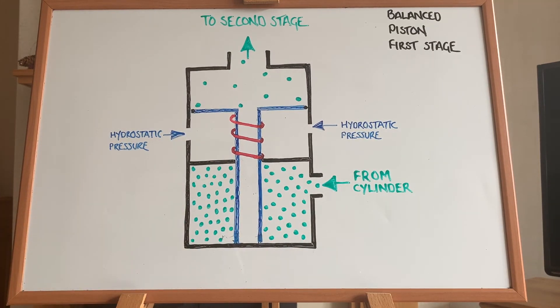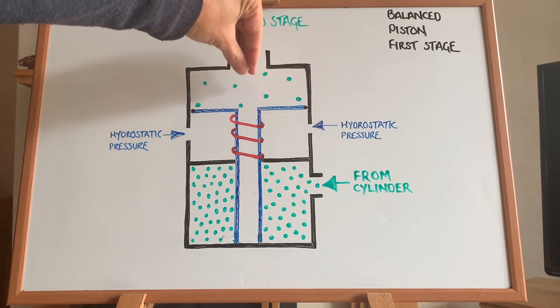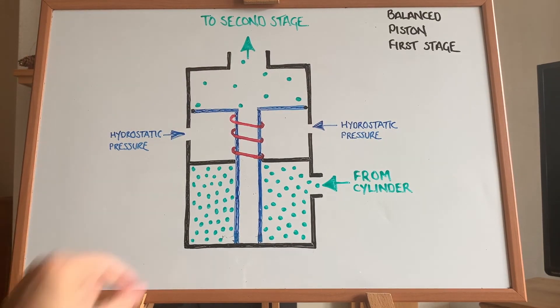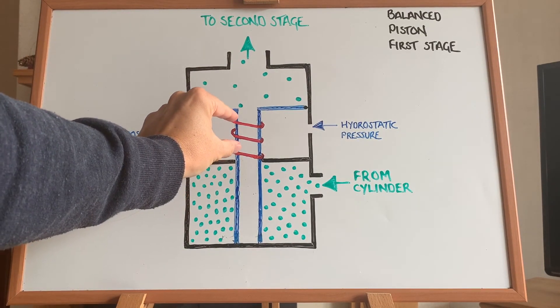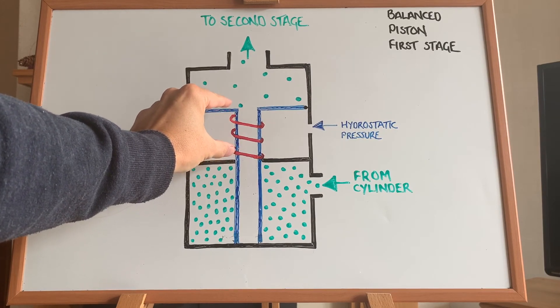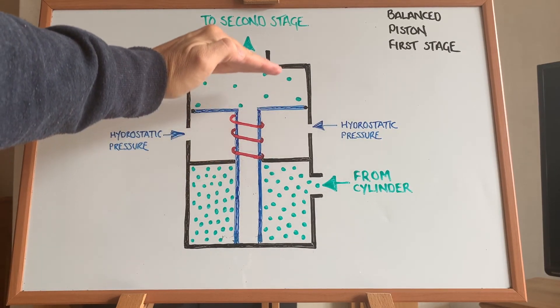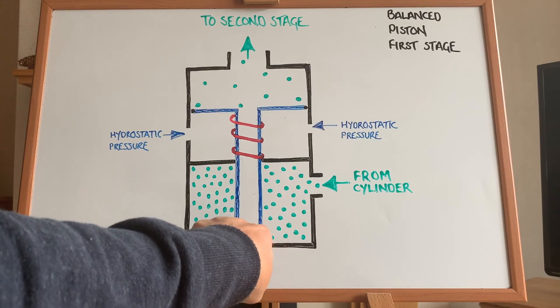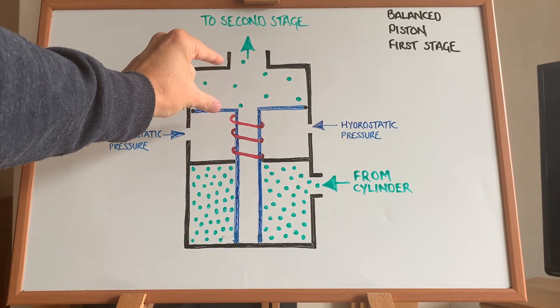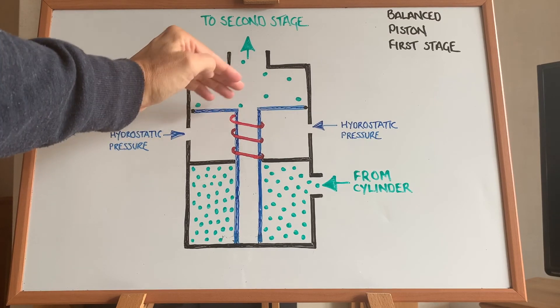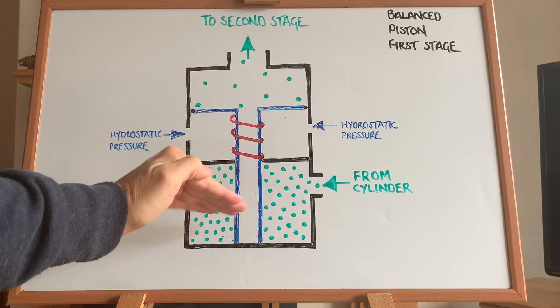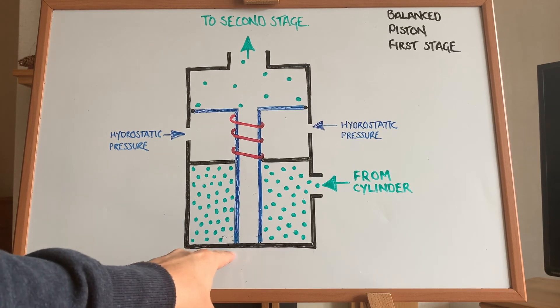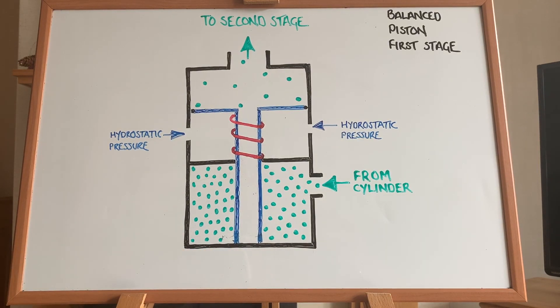Now, this will keep repeating itself as long as the diver keeps inhaling and exhaling. So again, diver inhales, they remove this intermediate pressure gas from that chamber, which allows the spring to uncoil and push the piston up. It becomes unseated from the base. This high pressure gas can then leak inside the piston, work its way up and start to fill this chamber. As it fills and the pressure builds, it pushes the piston back down, resealing it across the bottom, and it will keep repeating as long as the diver is breathing.